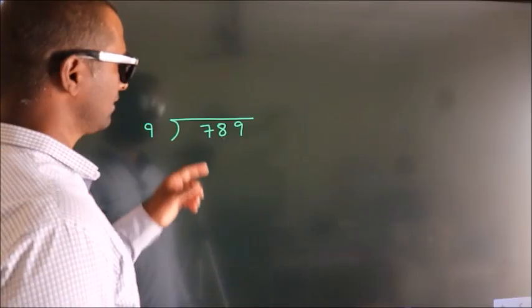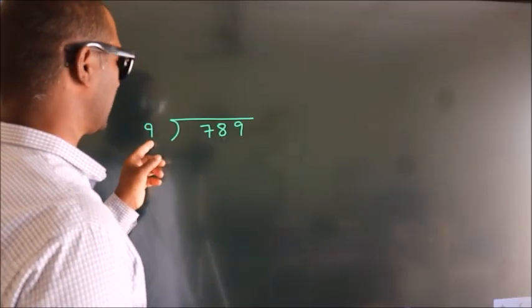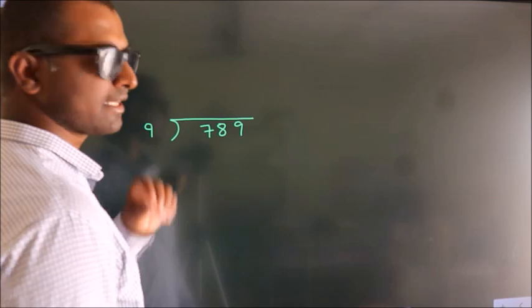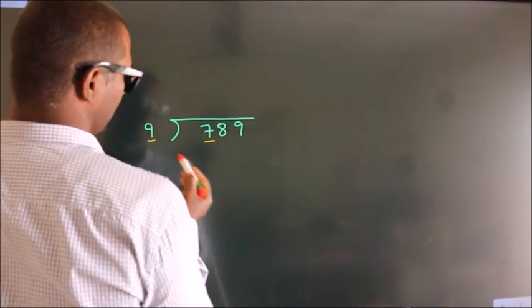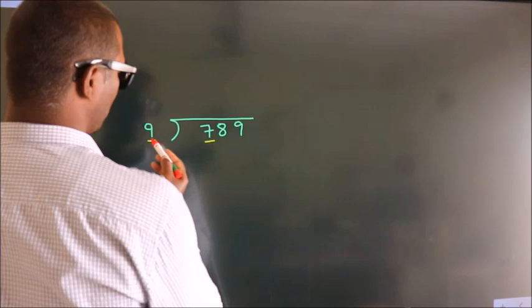How to divide 789 by 9? See, here we have 7, here 9. 7 is smaller than 9.